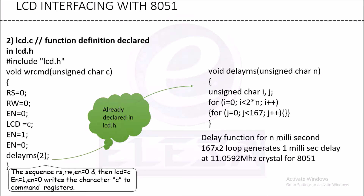Before writing to the command register, rs, rw, and en are set to 0 so that they become perfectly 0 before writing character c. After writing c, we enable — en equal to 1 — and then disable — en equal to 0. Some execution time is needed for this sequence, so we give delayms equal to 2.